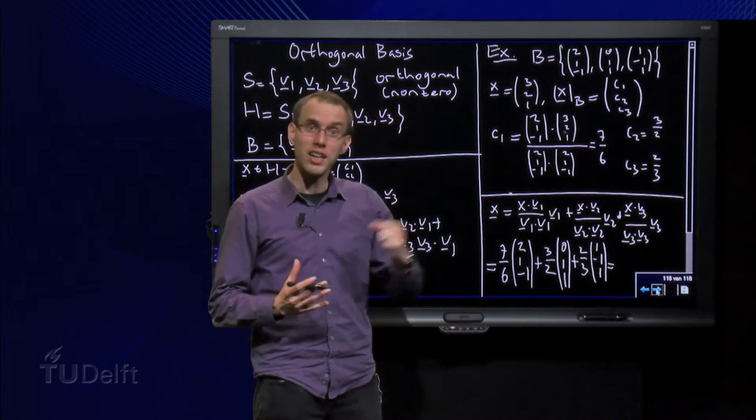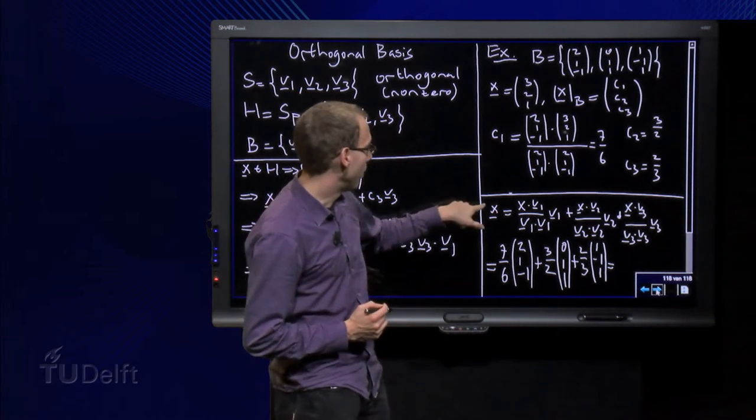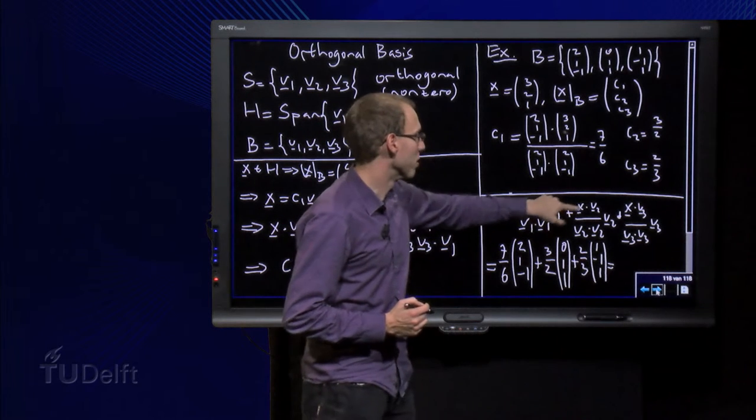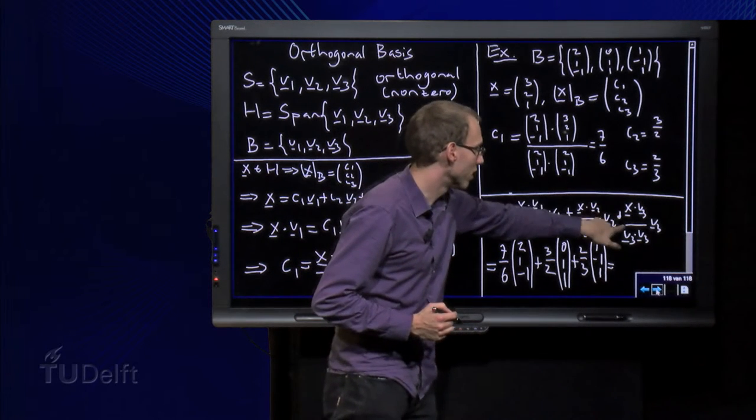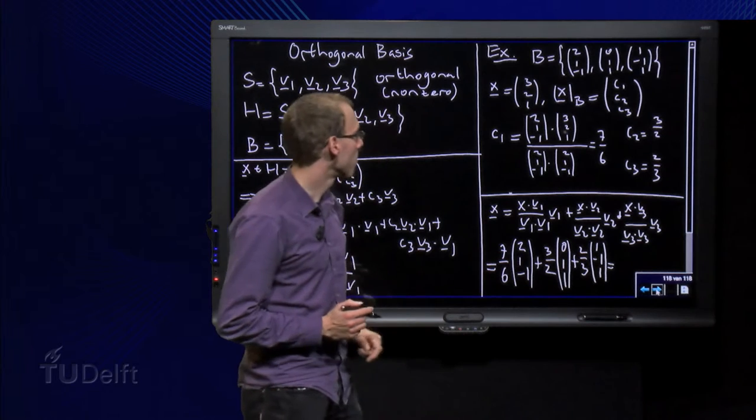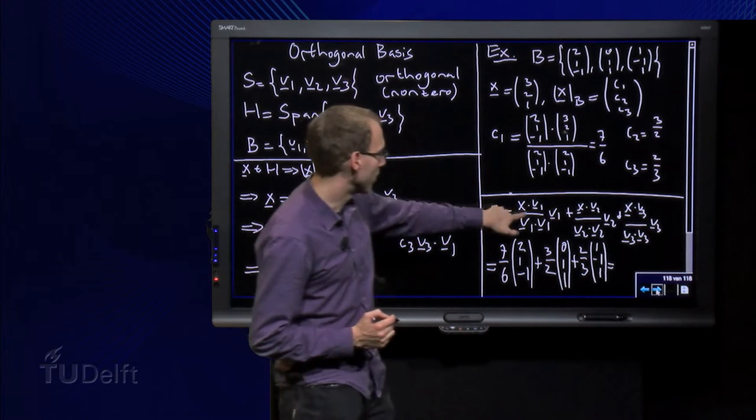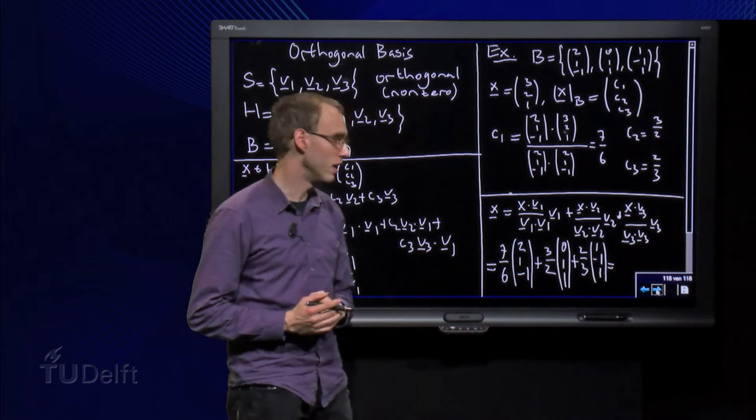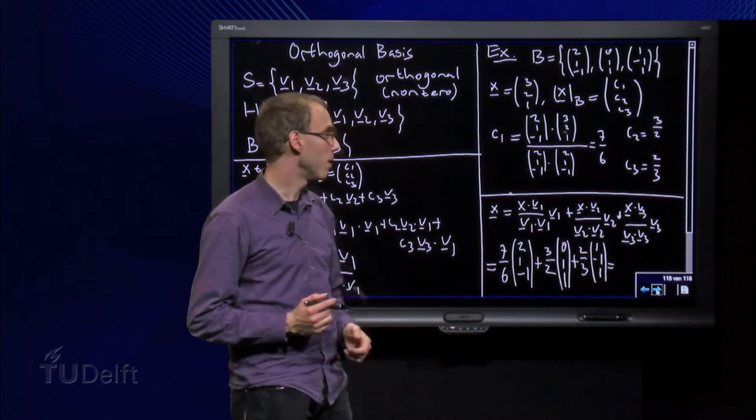And we can check our answer because we know x equals c1 times v1 plus c2 times v2 plus c3 times v3, where the weights are given over here, c1, c2 and c3. We have computed them.